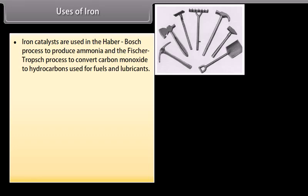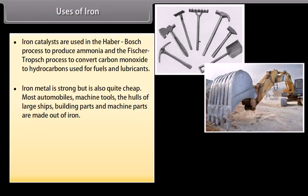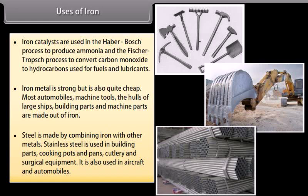Uses of iron. Iron catalysts are used in the Haber-Bosch process to produce ammonia and the Fischer-Tropsch process to convert carbon monoxide to hydrocarbons used for fuels and lubricants. Iron metal is strong but is also quite cheap. Most automobiles, machine tools, the hulls of large ships, building parts, and machine parts are made out of iron. Steel is made by combining iron with other metals. Stainless steel is used in building parts, cooking pots and pans, cutlery, and surgical equipment. It is also used in aircrafts and automobiles.